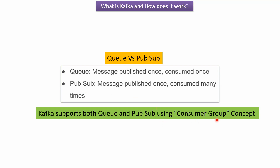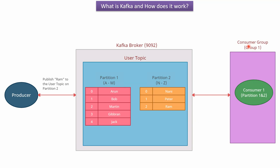To achieve parallel processing, consumer groups have been introduced. Here you can see a consumer group named group 1, and it has only one consumer. If only one consumer is there, then this consumer will consume usernames from both partition 1 and partition 2, and all these usernames will be consumed only once. So this is an example of a Queue.